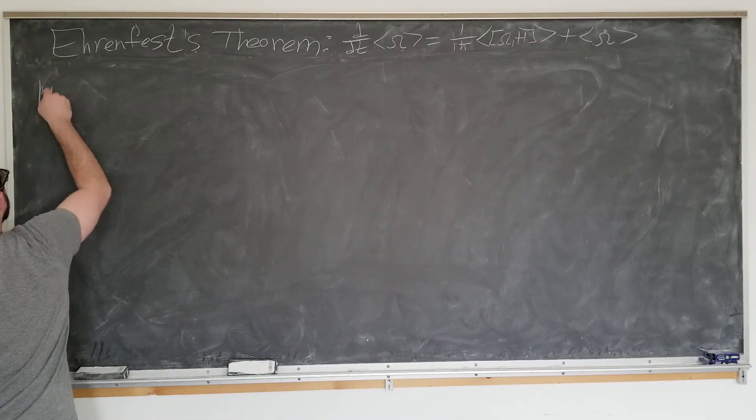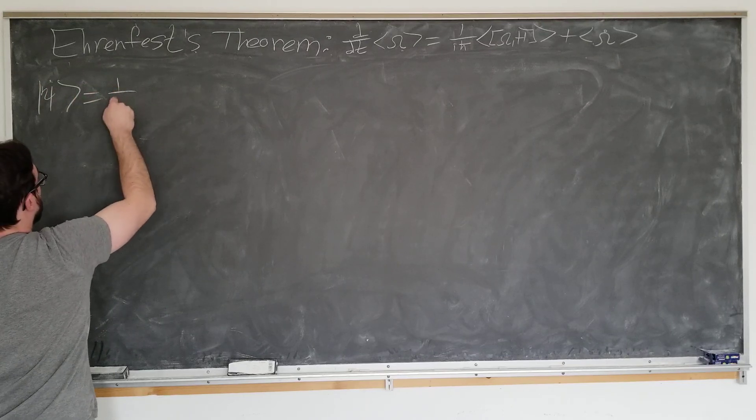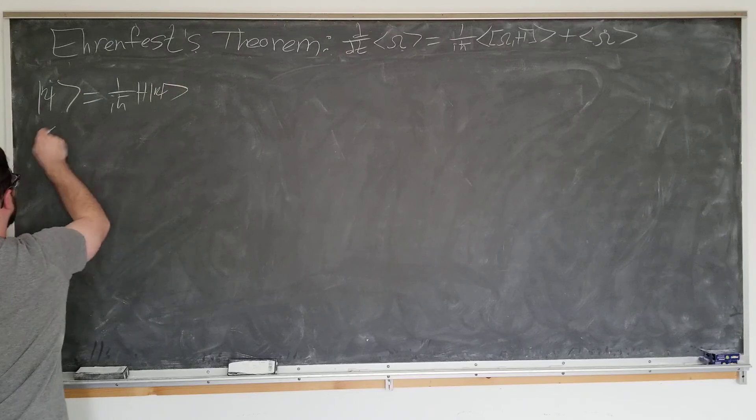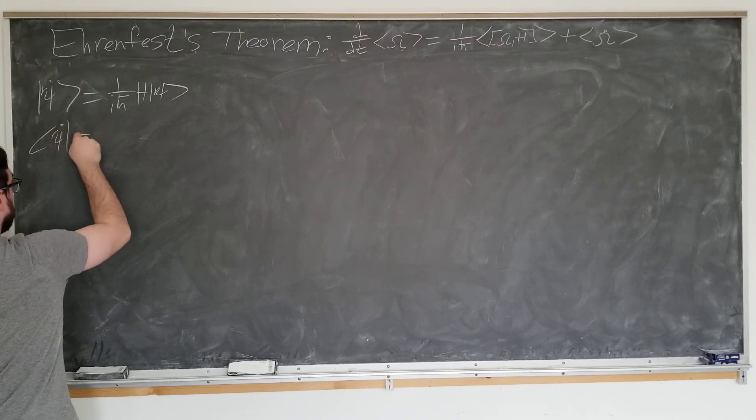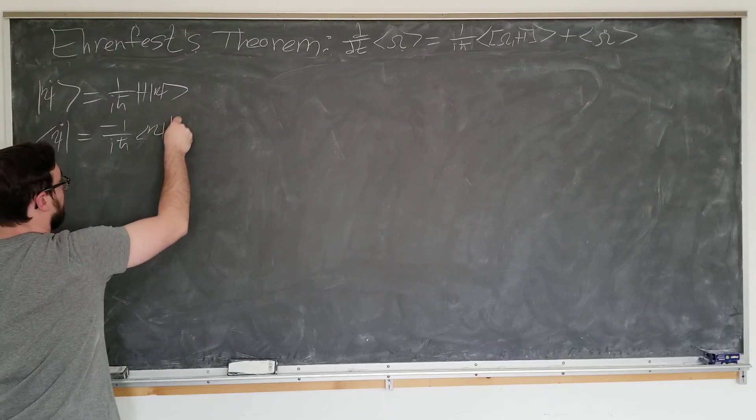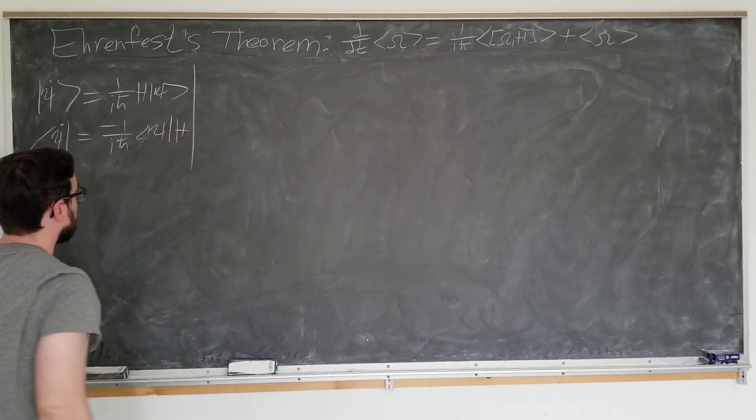So we know psi dot equals one over i h bar h psi, and the bra version, minus one over i h bar psi h.